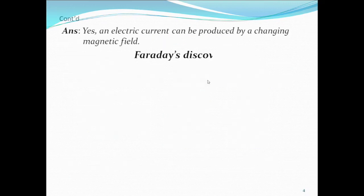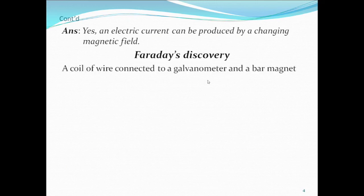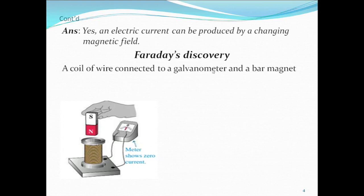This question is answered by Faraday's discovery. Faraday did an important experiment. He connected a coil of wire to a galvanometer and a bar magnet. He was able to detect the current — a galvanometer is an important device used to detect very small amounts of current.